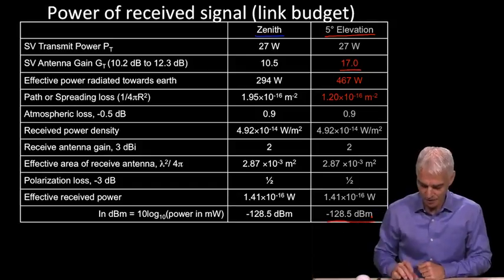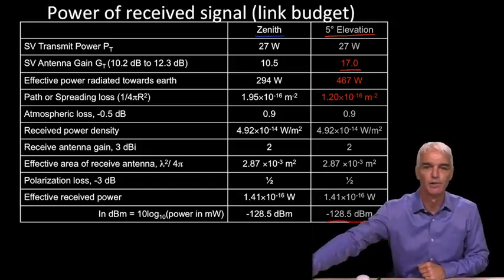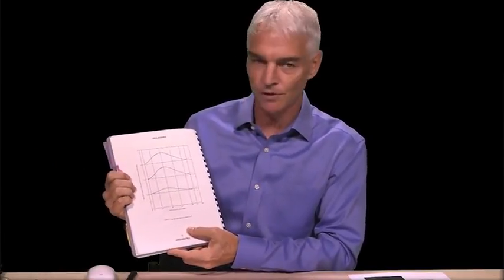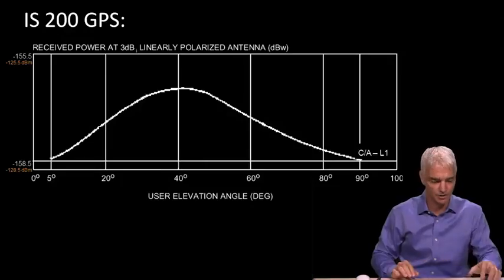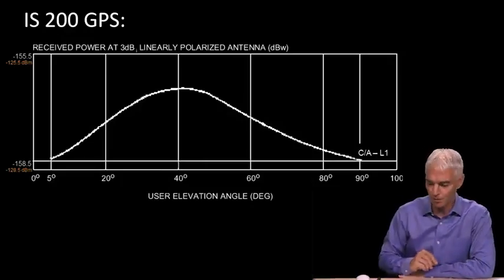And now we can go look at how does that compare with the interface specification. So GPS interface specification document is something very important. And you're going to live with this thing a lot when you work on GPS. And inside of this, there are plots to show you the expected signal power on the surface of the Earth.